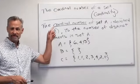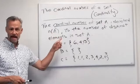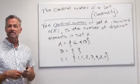So I've got here the cardinal number of set A, denoted n(A), is the number of distinct elements in set A.